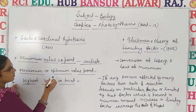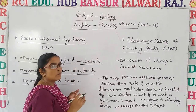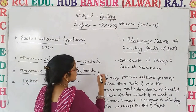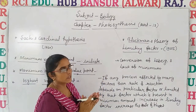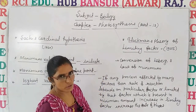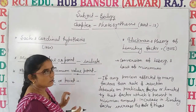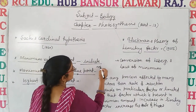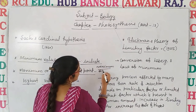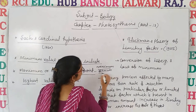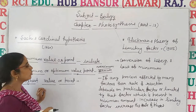Second, the maximum or optimum value point — it is the amount of factor which gives the optimum rate of photosynthesis. It means at this stage the rate of photosynthesis is maximum or optimum. This is the amount of factor at which the rate of photosynthesis is maximum.